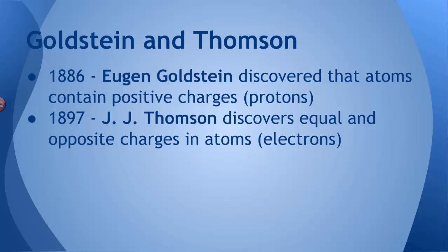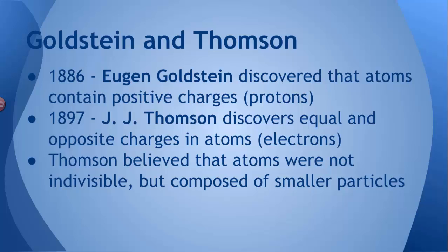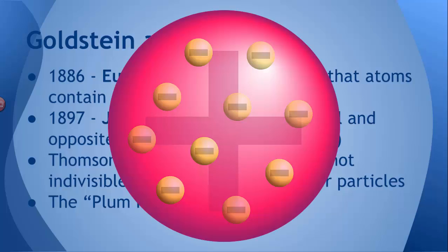Well, now Thompson said, no, actually, because of these positive and negative charges, the atom itself is not a single object. It's made of these tiny little pieces. And he proposed something called the plum pudding model, which was this ball of positive charges in which electrons were sort of stuck, just kind of hanging out there.